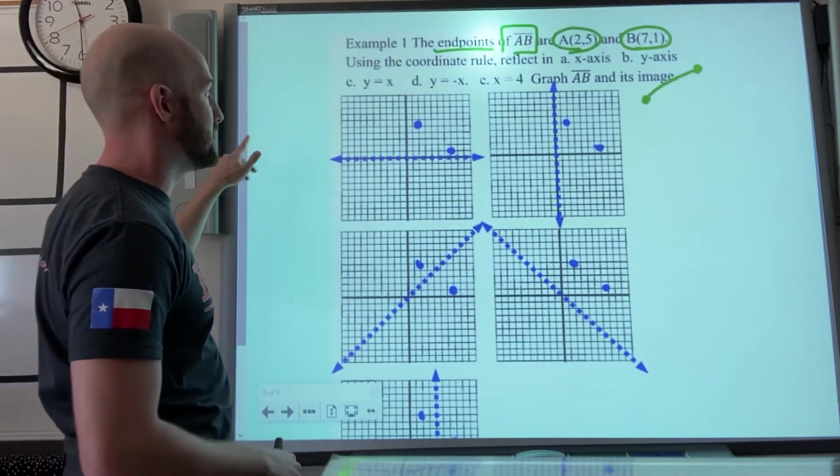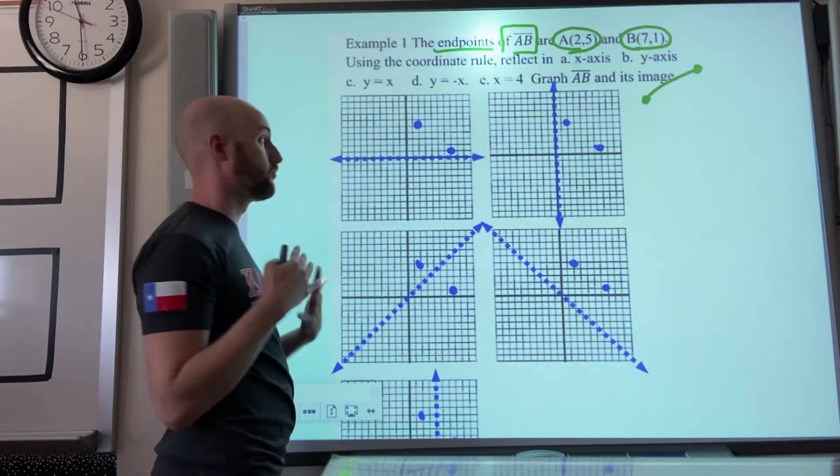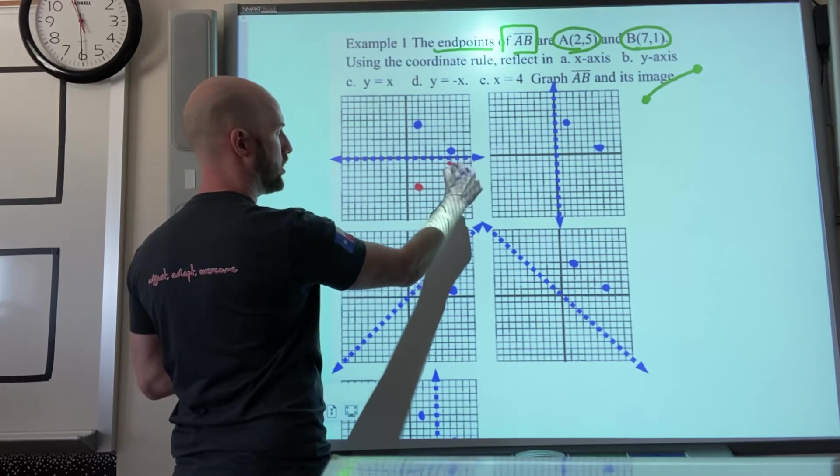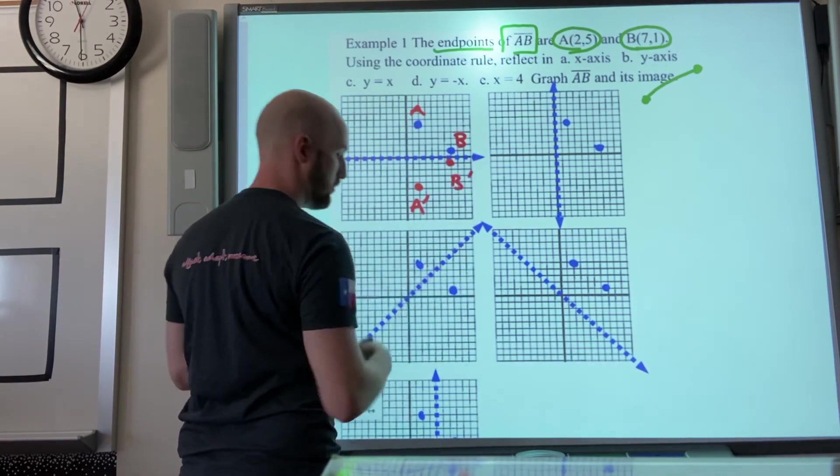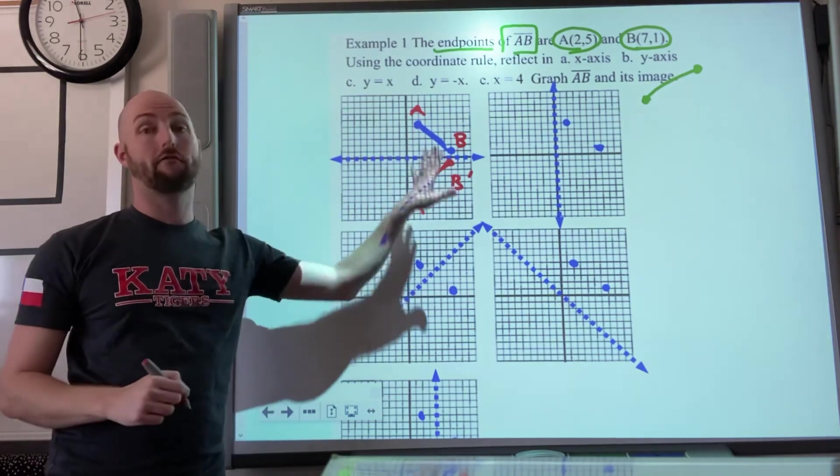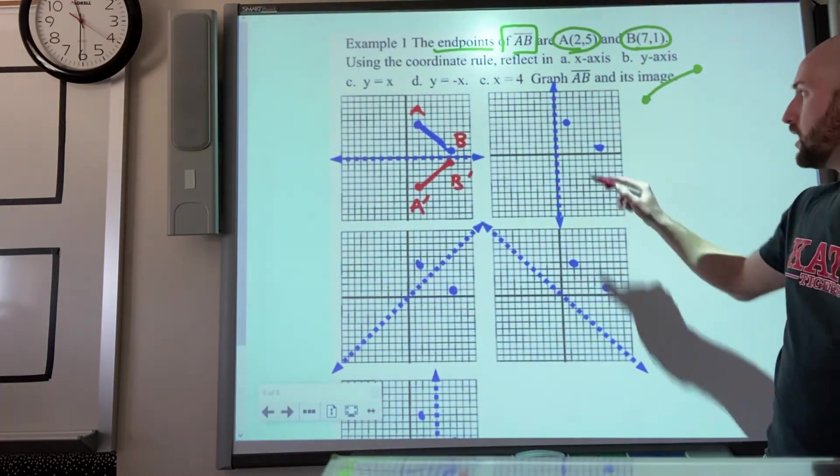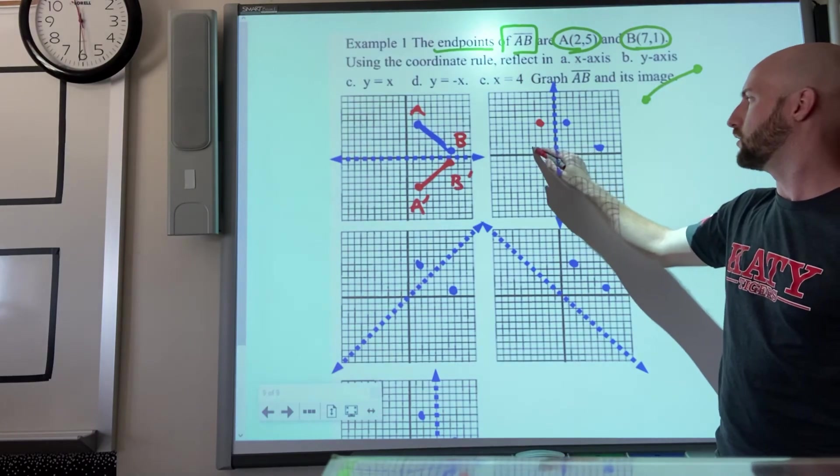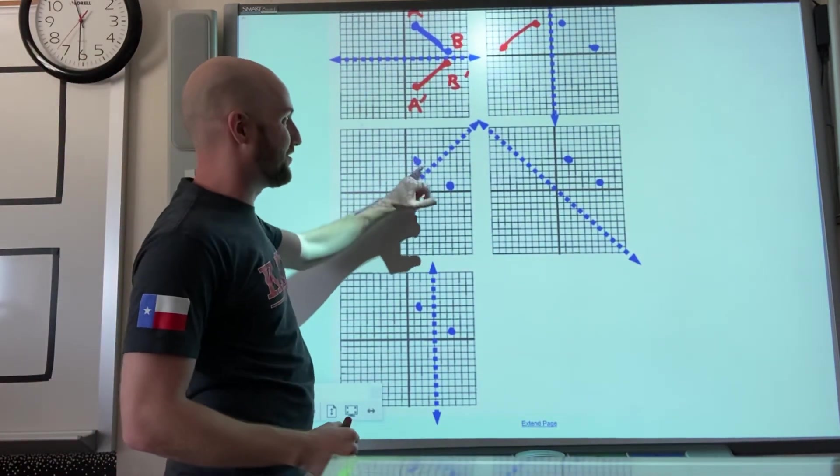The question said reflect across the x-axis, the y-axis, all those different things. So if I want to just count and not apply a rule, we're going to go one, two, three, four, five and then repeat that distance one, two, three, four, five. Here one, here one. Technically if this was a quiz or test I would want to see these labeled as A and B, this labeled as A prime, B prime. And because it's a segment, this would be connected and so would be the reflective segment. This is a perfect example of what I want it to look like.